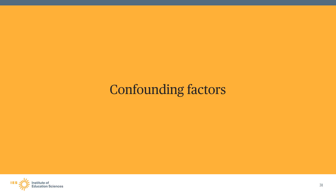Now that we have discussed the WWC's four outcome measure standards, we will discuss how the WWC checks for confounding factors. In brief, confounding factors are study components that make it difficult or impossible to distinguish between the effect of the intervention and the effect of that component. We will provide examples of confounding factors as well as examples of things that are not confounding factors, and we will discuss how confounding factors affect a study's research rating.